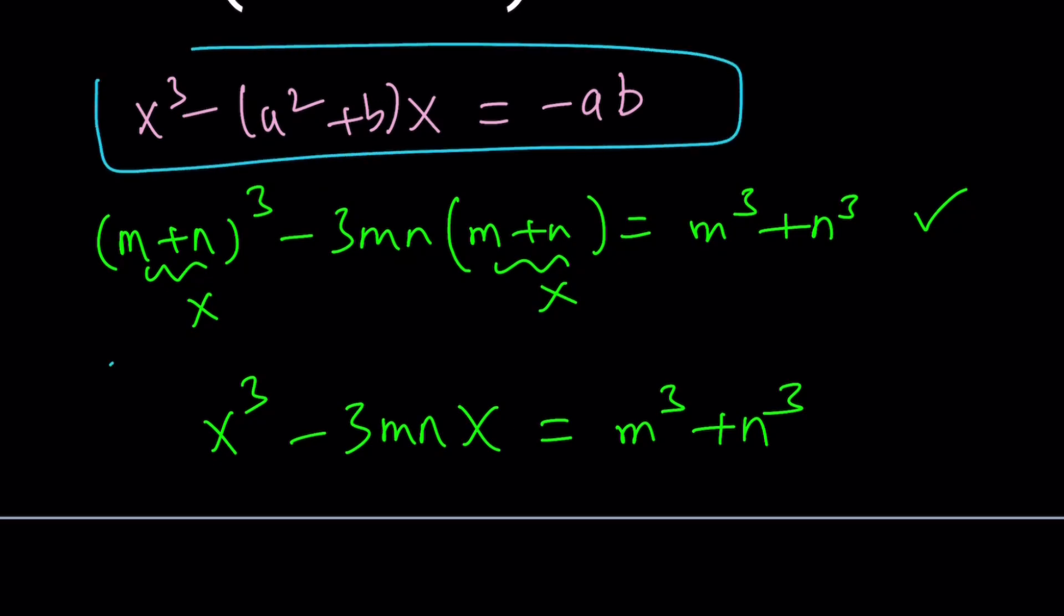Compare these two equations and then go from there. Notice that the coefficient of x here is 3MN with the negative. Here it is a²+b with the negative.